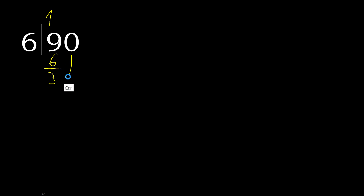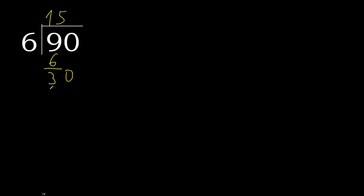Next: 30. 6 multiplied by 5 is exact — 30. That is not greater. 30 minus 30 is 0.